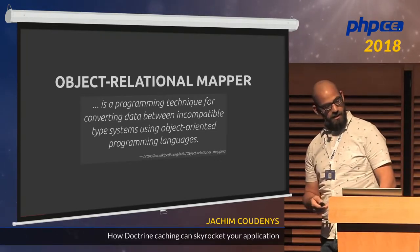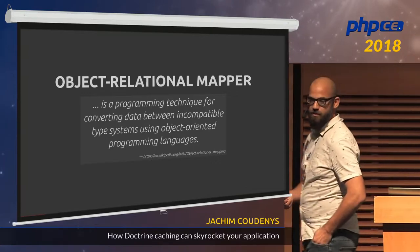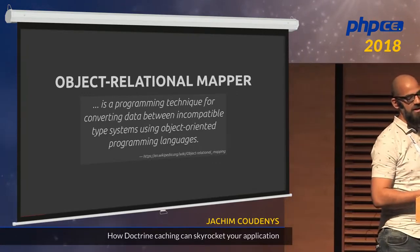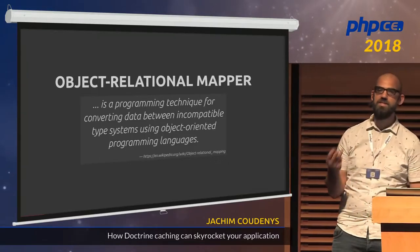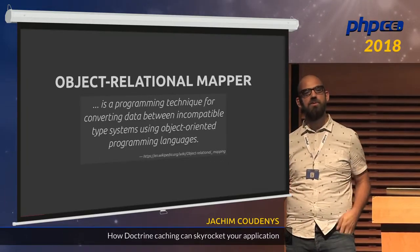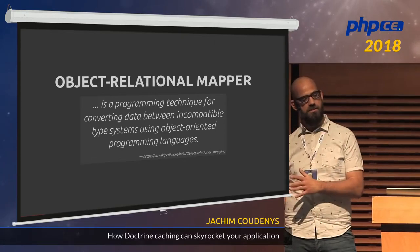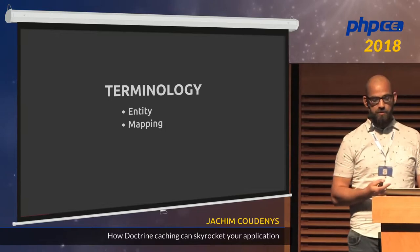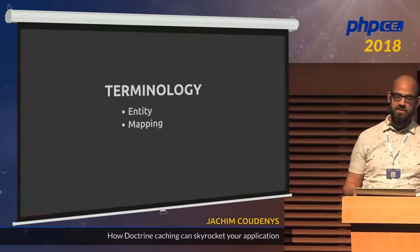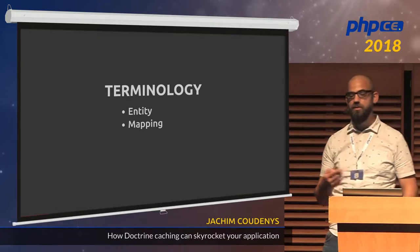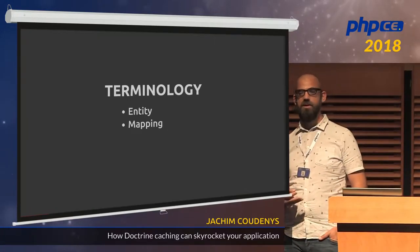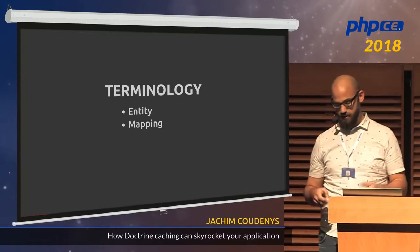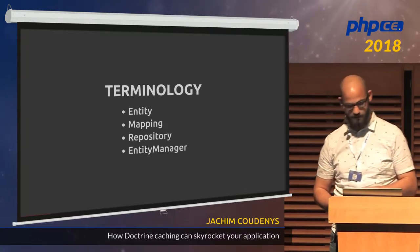Basically, Doctrine takes records from a database or another structure that is not compatible with our object-oriented way of working in PHP, and it maps the data into objects. Some terminology to cover quickly since most of you are already using it: you have an entity, you need some kind of mapping to describe how the properties of the entity map to the fields in the database, you can use a repository to fetch data, and we have the entity manager itself, which is used to access everything in the database.